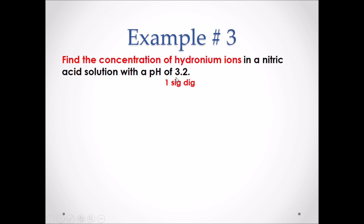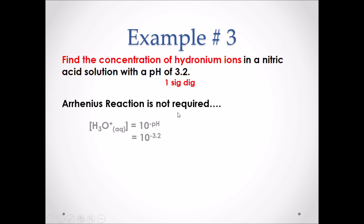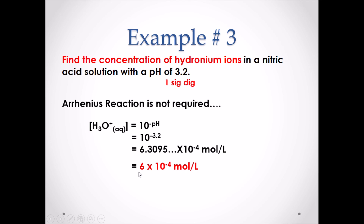Note that a pH value of 3.2 only has one significant digit — the 2 after the decimal place. An Arrhenius equation is not actually required for this example. We simply use: concentration of H₃O⁺ equals 10 to the exponent negative pH. Solving this gives 6.3095... × 10⁻⁴ moles per liter. We round this to one significant digit, so the concentration of H₃O⁺ in the solution is 6 × 10⁻⁴ moles per liter.